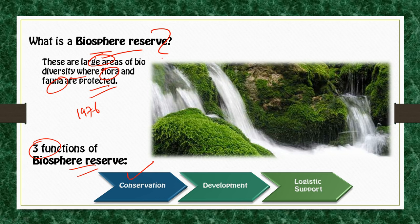The first function is conservation — that is to conserve genetic resources, species, ecosystems, and landscapes. The second is development functions, that is to promote sustainable development. The third one is logistic support, that is to provide support for research and analyzing the issues of conservation and sustainable development.